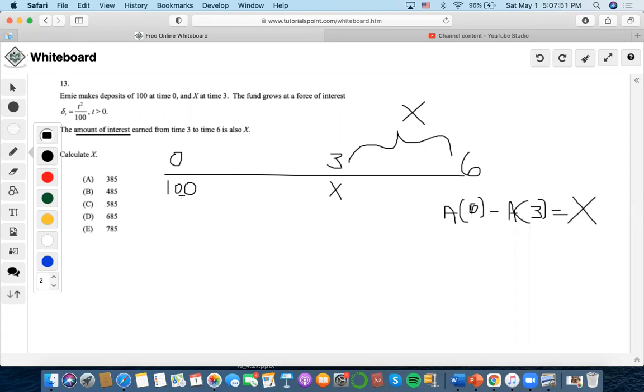So we would find the accumulation factor of 100 at time 3 by setting up an integral of 100 t squared over 100 dt. We would have to find it at 6 as well, so 0 to 6 as well.